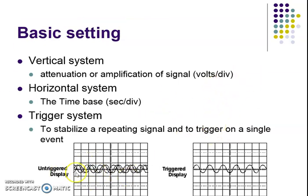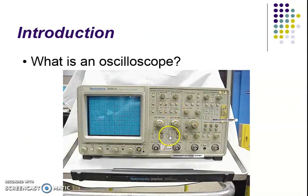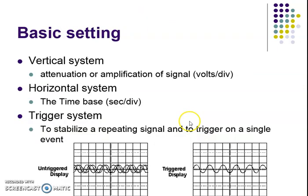Two waveforms can be displayed at the same time, and we can shift the waveform up or down. There is also internal or external triggering available. The horizontal system is mainly the time base — the time-per-division knob, which changes the time period of the waveform. The vertical system contains the volts-per-division knob, which controls the amplitude of the waveform.